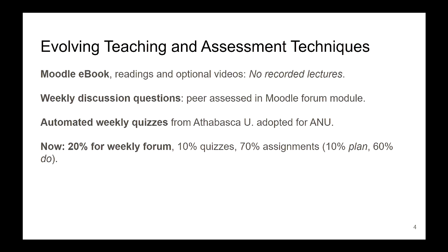Of the 70%, 10% is for planning and 60% for doing. I have that classic thing where a student will wait until the week of the assignment to start work. So a few years ago I introduced the requirement where, for a small amount of the assessment, you have to submit an outline and a plan of what you're going to do. I keep changing the amount required and maybe we'll try a peer component with that.